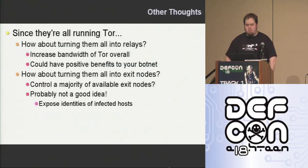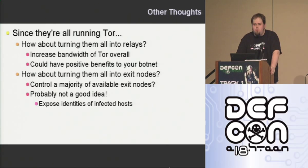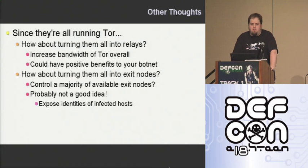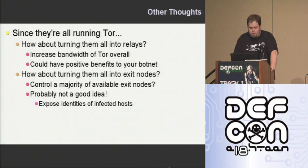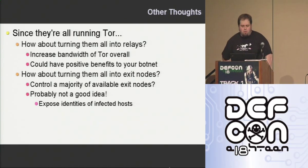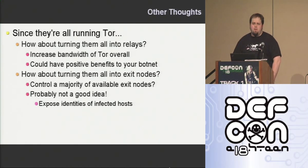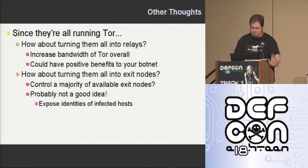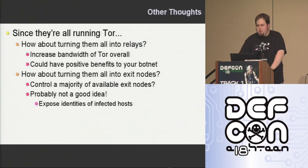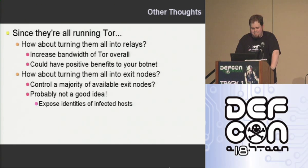So a few other thoughts. Since we're all running Tor, how nice would it be to turn them all into relays? There's increased bandwidth in Tor overall, especially if you have a pretty sizable botnet — and this could have really positive effects for your botnet if you can actually increase the speed of Tor in any significant way. On the other side, how about turning them all into exit nodes? It could be interesting if you had a majority of Tor exit nodes and could actually control traffic going through it or sniff the traffic — like we saw a few years ago with people finding embassy emails and other documents by sniffing Tor exit nodes, which is of course a bad thing to do. But it's probably not a good idea, because you'll be exposing the identities of your bots. You don't want them popping up on the Tor exit node list and having a lot of attention drawn to you.